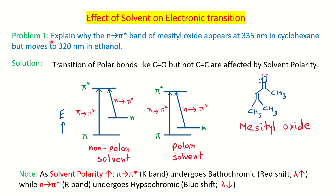Let's begin with this problem: the n→π* band of mesityl oxide appears at 335 nm in cyclohexane and moves to 320 nm in ethanol. You can notice the wavelength is reducing - 335 nm to 320 nm - that means hypsochromic shift. Cyclohexane is a nonpolar solvent while ethanol is a polar solvent. So we conclude: on increasing the polarity of solvent, the wavelength of absorption for n→π* transition decreases - that is the hypsochromic shift.